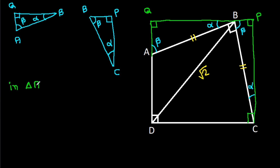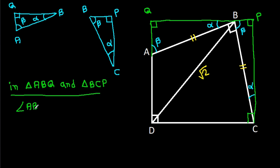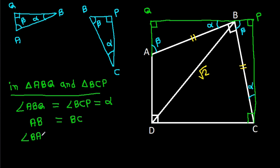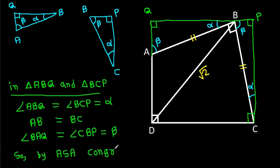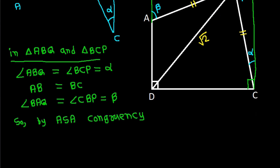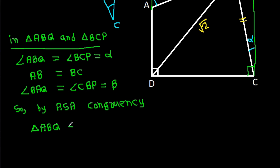Now in triangle ABQ and triangle BCP, we have angle ABQ equal to angle BCP, that is alpha, and angle BAQ equal to angle CBP, that is beta. So by angle-side-angle congruency, triangle ABQ is congruent to triangle BCP.